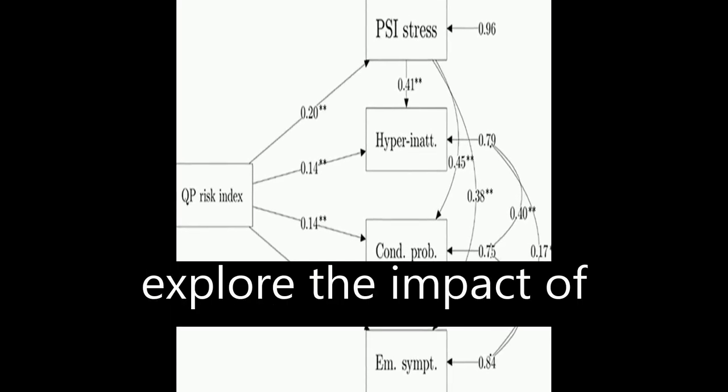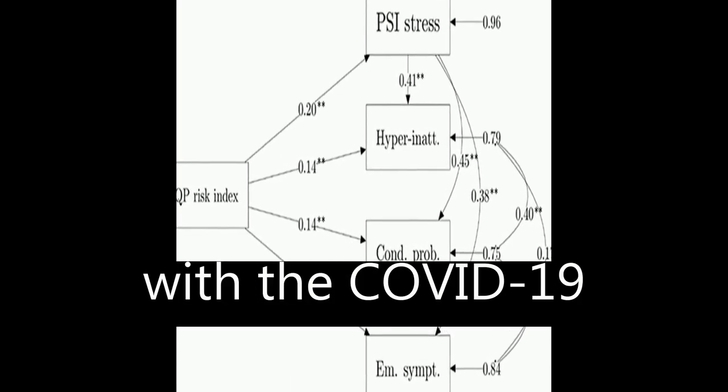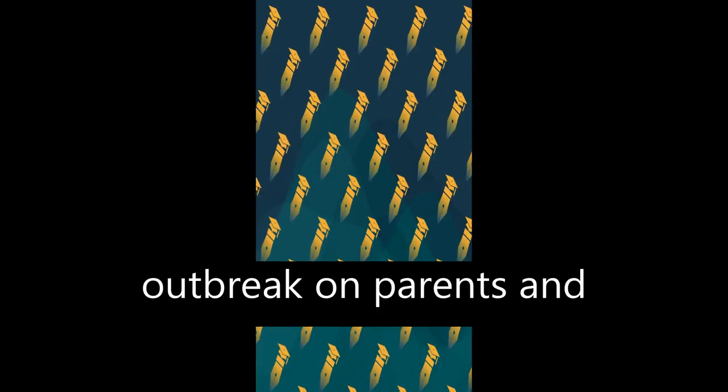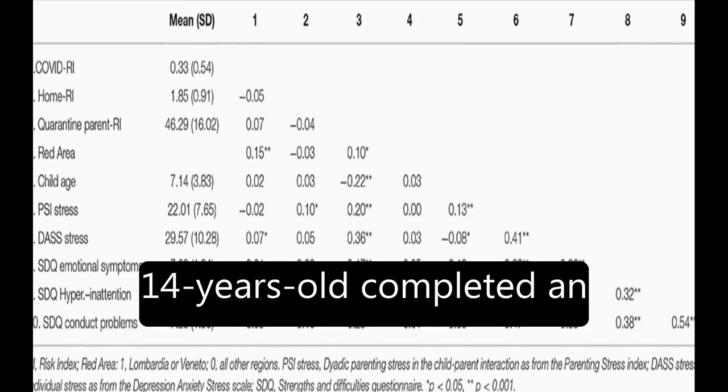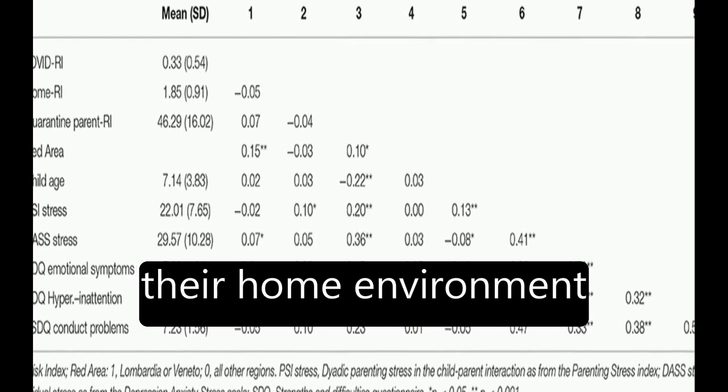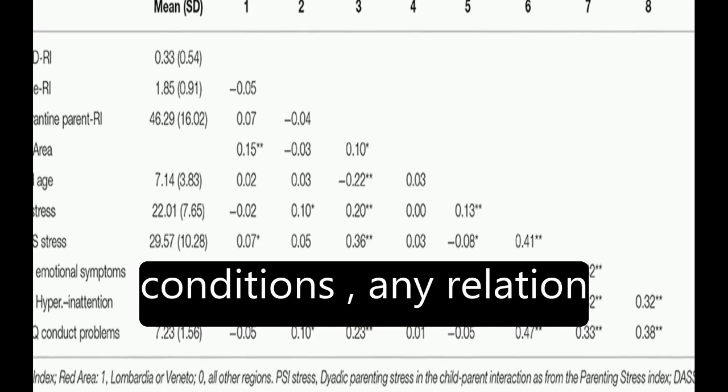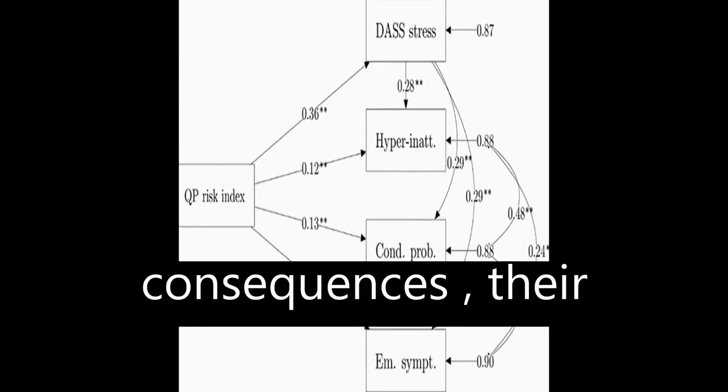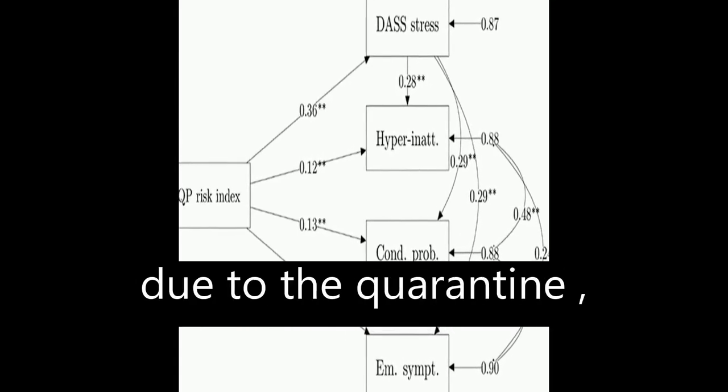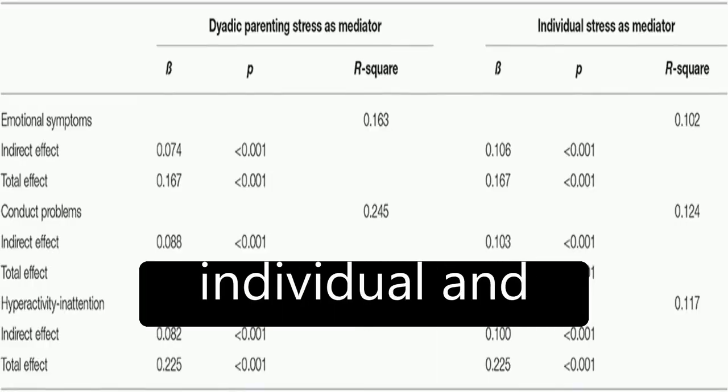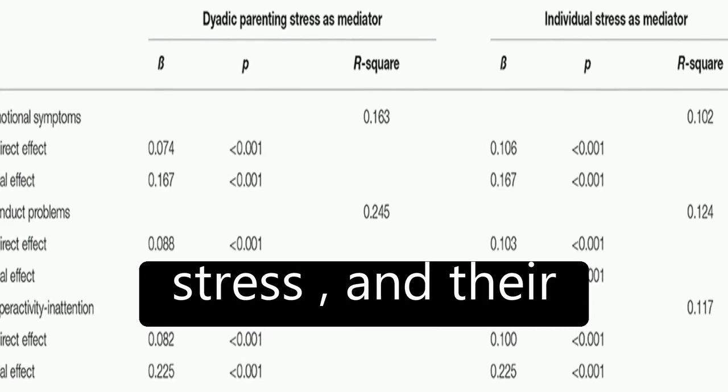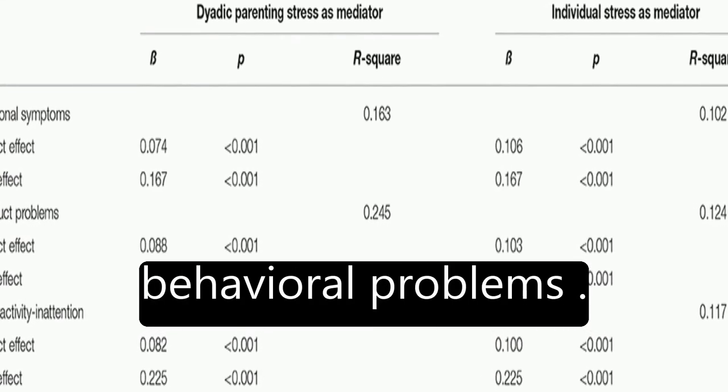The study aimed to explore the impact of risk factors associated with the COVID-19 outbreak on parents and children's well-being. Parents of children aged between 2 and 14 years old completed an online survey reporting their home environment conditions, any relation they had to the pandemic consequences, their difficulties experienced due to the quarantine, their perception of individual and parent-child dyadic stress, and their children's emotional and behavioral problems.